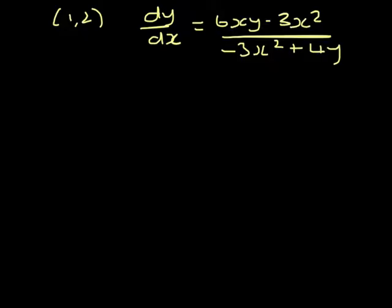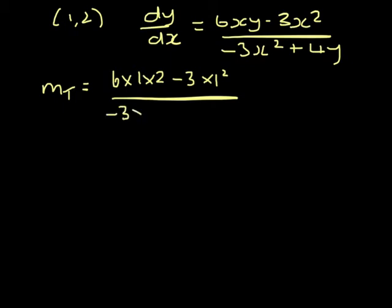Part 2, I then need to find the equation of the tangent. So the gradient of the tangent will be 6 times x times y minus 3 times x squared all over minus 3 times x squared plus 4 times y.